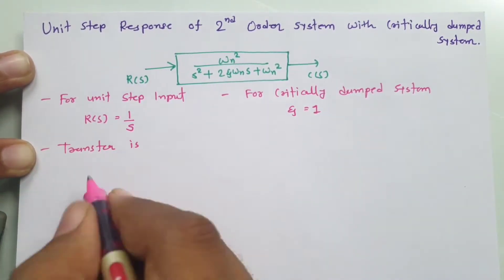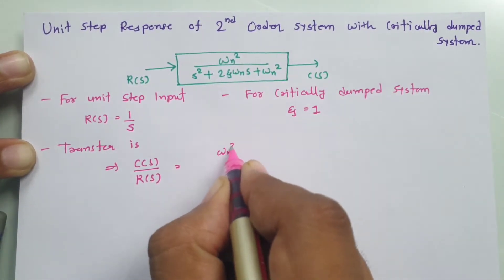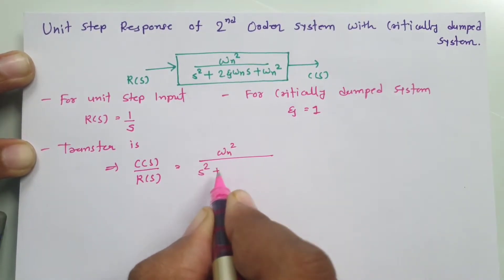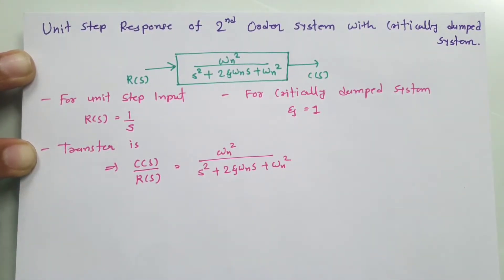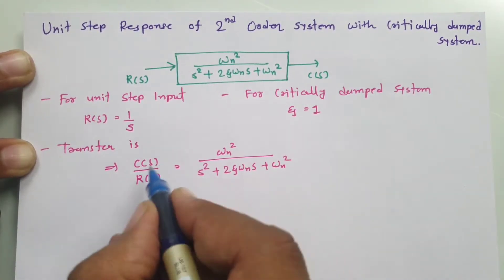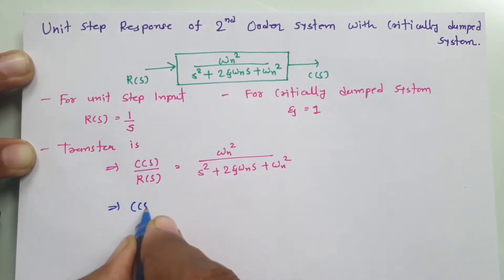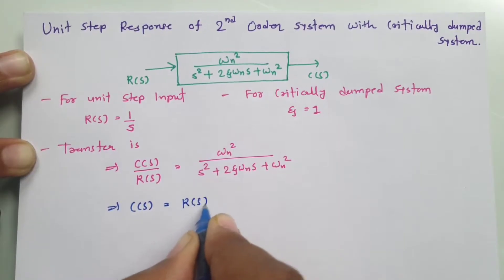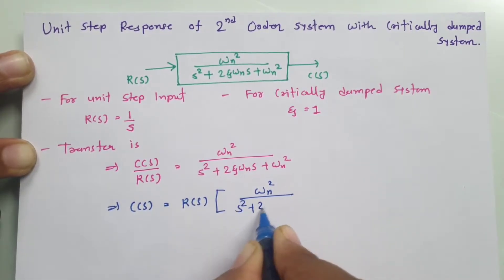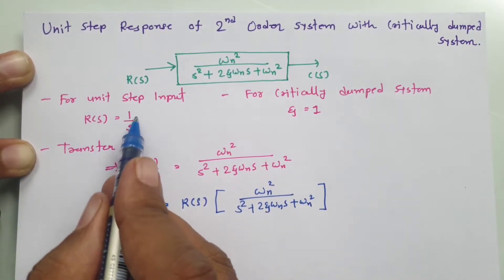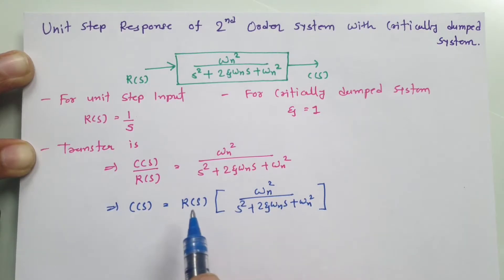The transfer function is the output transform divided by the input transform, which equals omega_n squared divided by S squared plus 2 zeta omega_n S plus omega_n squared. Our input R(S) equals 1 over S and zeta equals 1, so let us substitute those values.